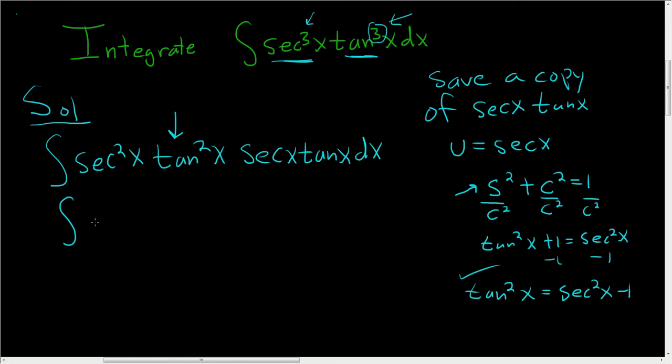Okay, so here we have secant squared x. Tangent squared is secant squared x minus 1. And here we have secant x tangent x dx.